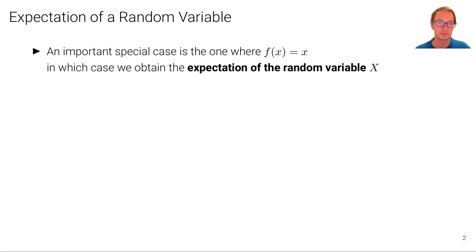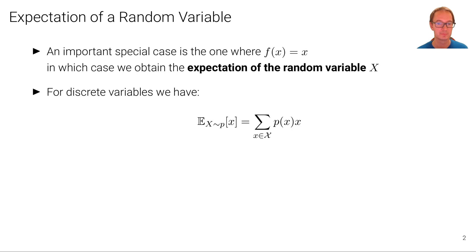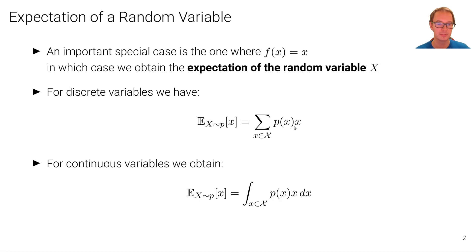An important special case is where the function of x is the identity, in which case we obtain the expectation of the random variable x itself. For discrete variables, the expectation of x is the sum of p of x times x. For continuous variables, we have the same, except that we swap the summation with an integral.